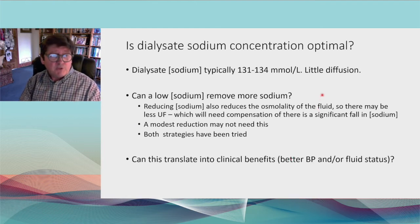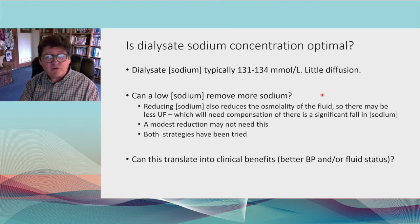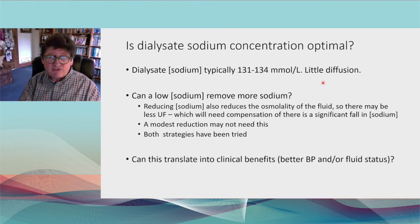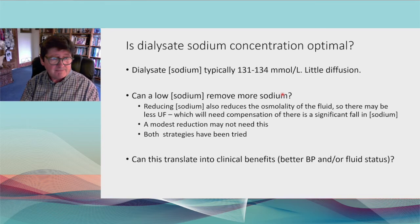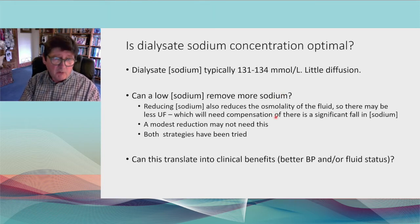Regarding the sodium concentration in dialysis fluid — is it optimal? Typically, PD solutions run between 131 and 134 millimoles per litre, not so different from plasma, so very little diffusion of sodium occurs. This can be changed by reducing dialysate sodium concentration, but that reduces the osmotic concentration, so you'd need to compensate by increasing glucose concentration.